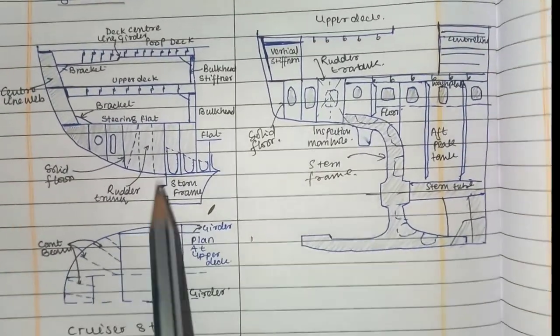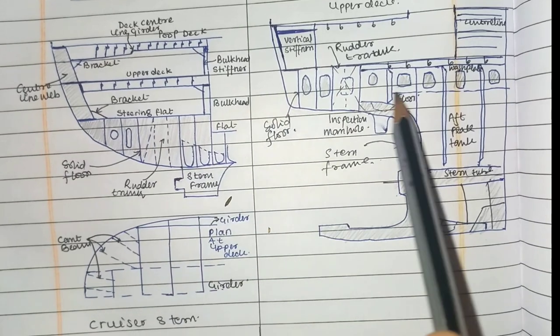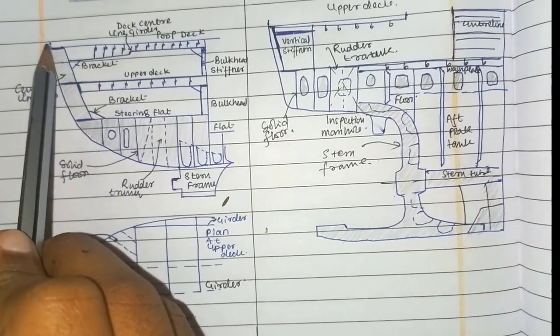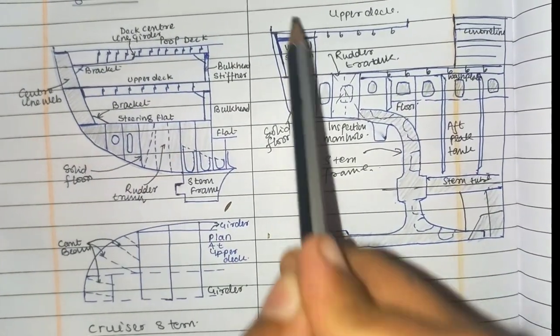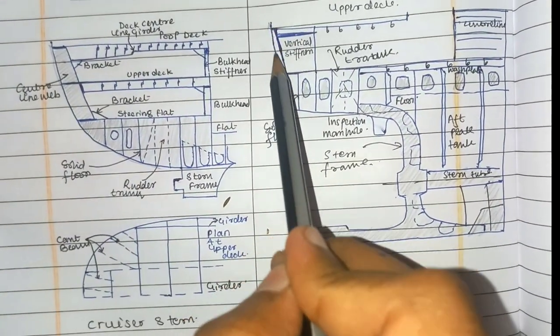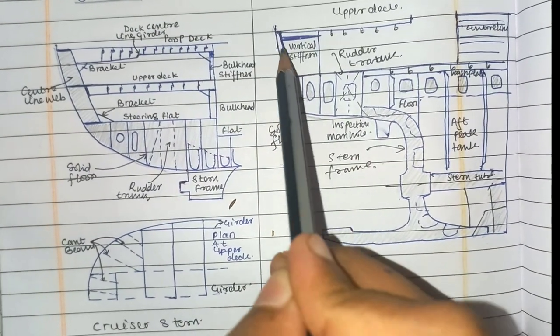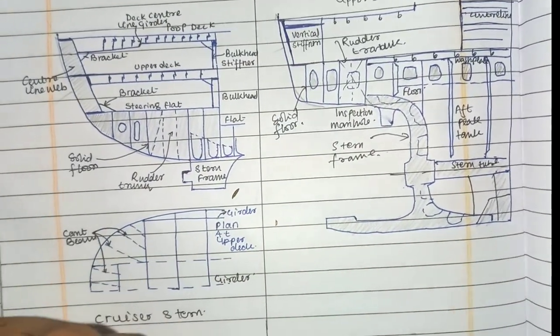This is how cruiser's turn looks like and this is how transom's turn looks like. Here is the curved section of the cruiser's turn, and here is the flat section of the transom's turn, which is called the transom, and this is called the cant frame.